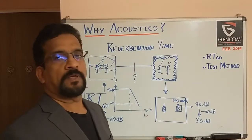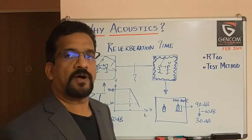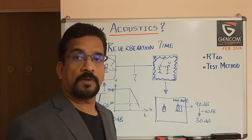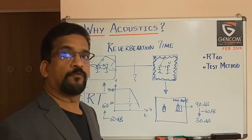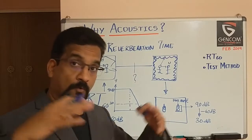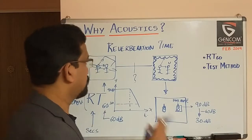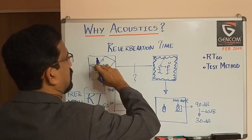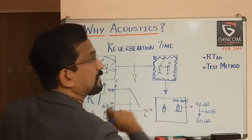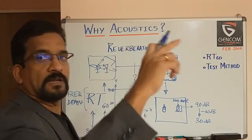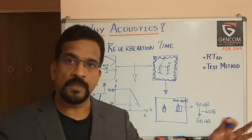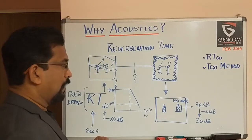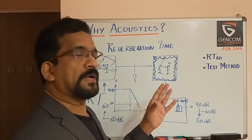In an acoustically treated room, the value might be about 0.05 or 0.1 seconds, whereas a highly reverberant room may go up to 4 or 5 seconds. In a bigger room, the reverberation time is higher because the sound takes longer to travel, get reflected off different walls, and decay. So the bigger the room, the higher is the reverberation time.